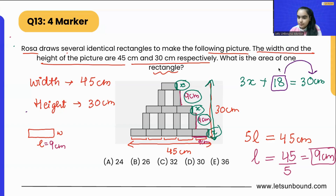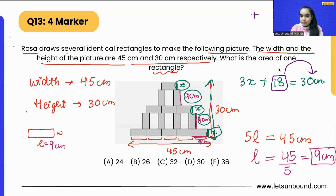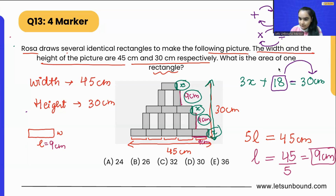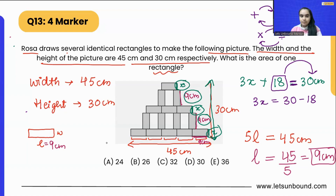To solve this, we shift 18 to the other side. Remember: when shifting a number from one side to the other, the sign changes — addition becomes subtraction. Since 18 is on the left-hand side, we subtract 18 from 30. So 3x = 30 − 18, which gives us 3x = 12.